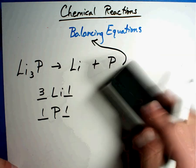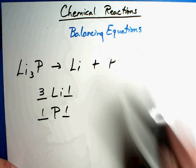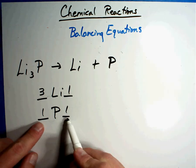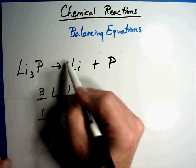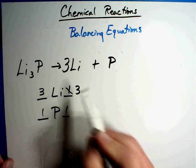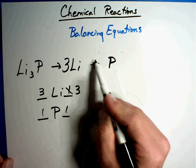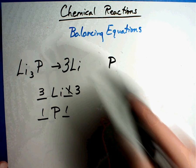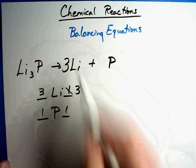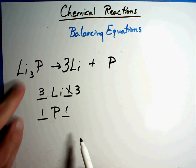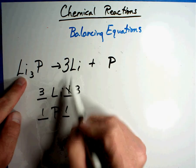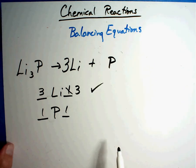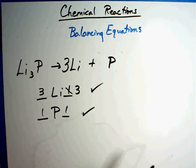Let's check our numbers. Lithiums: three on one side and one on the other. I fix that with a three in front of Li. Does the three count for the P? No, because there's a plus sign that separates them — the plus sign keeps them separated, so the three only goes with Li. Three Li's and three Li's. One phosphorus and one phosphorus. Sometimes they don't take much work at all.